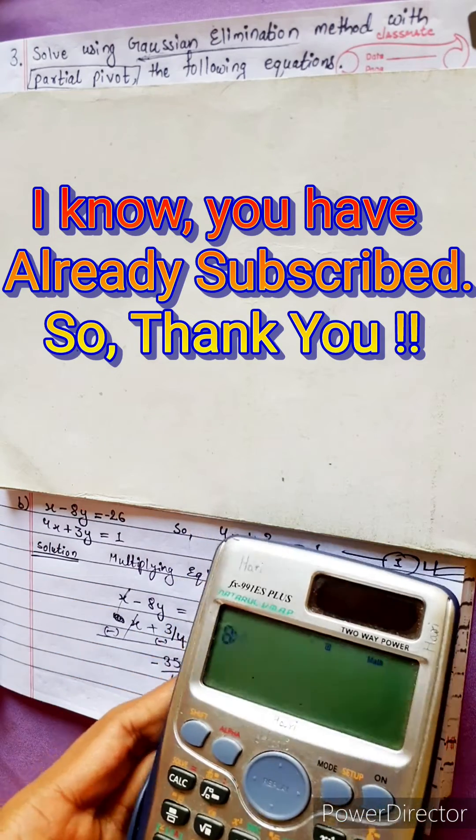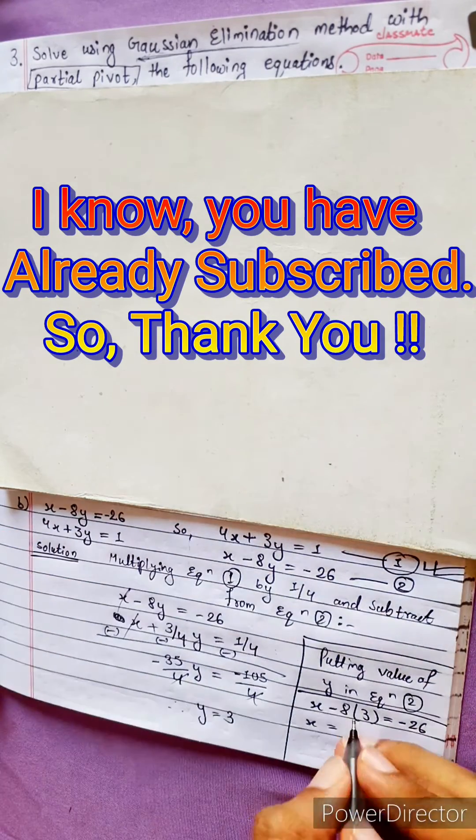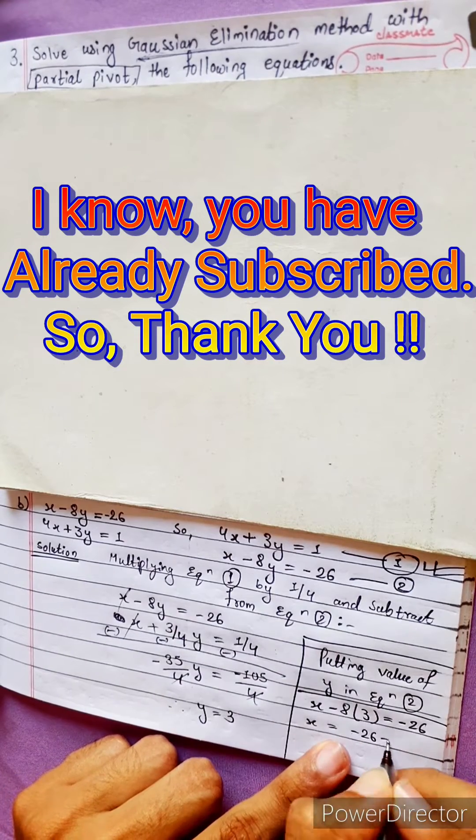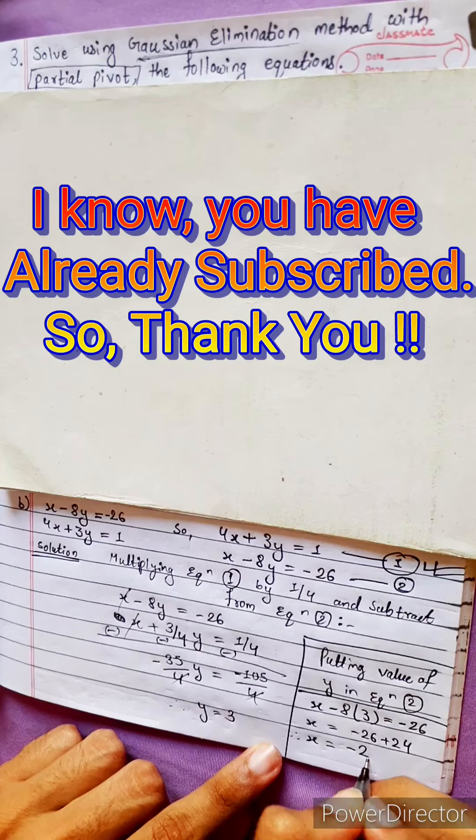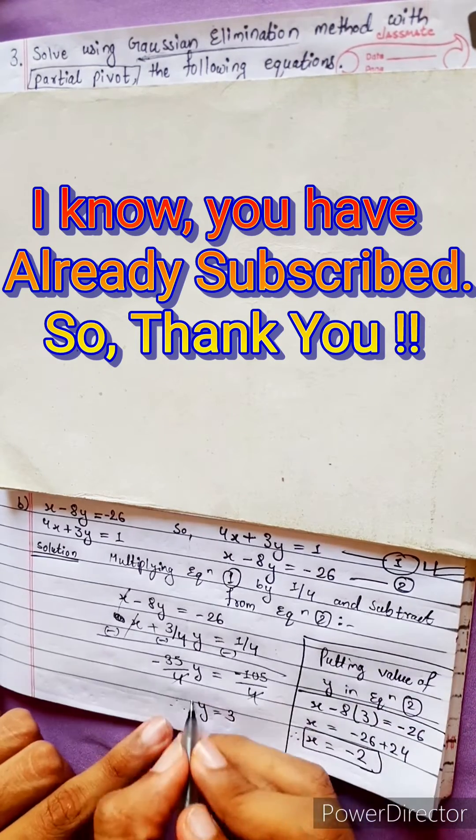Let me check. Yes, 24. Minus 26 plus 24, x equals to minus 2. y equals to 3.